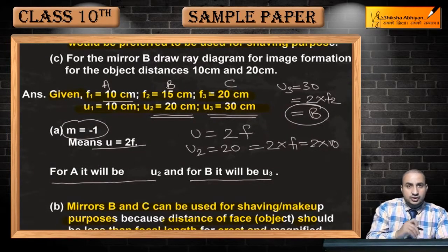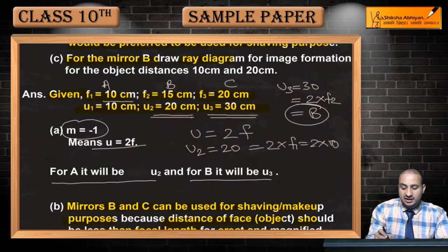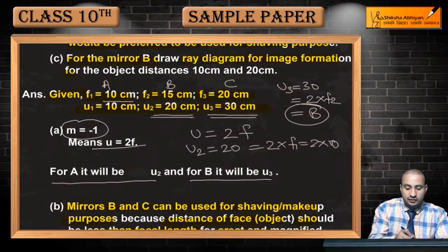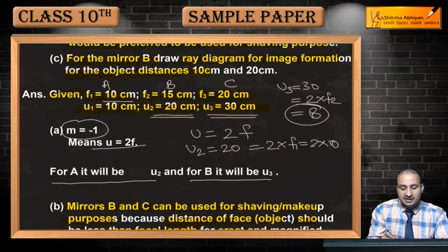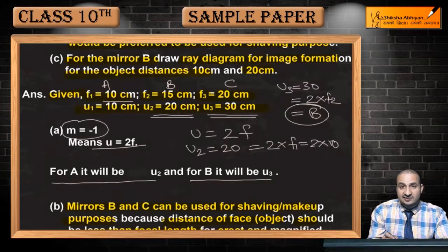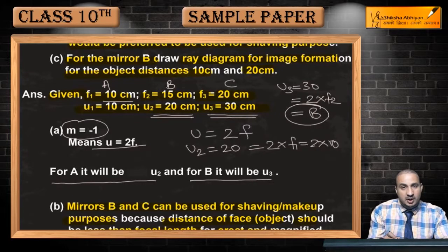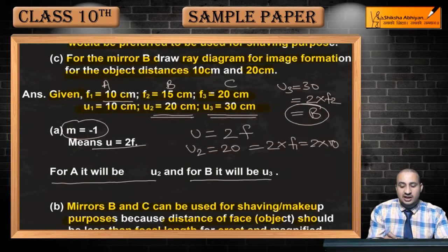Ab third wala jo hai, C part mein hum dekhte hain. For the mirror B, draw the ray diagram for the image formation for the object distance 10cm and 20cm. B ke liye 10cm pe jab aap object rakhte hain, 20cm pe. 10cm ka matlab ho gaya... dekhiye, focal length 15cm hai, to pole or focal length ke beech mein jab object hogi, tab kaisi image banegi?